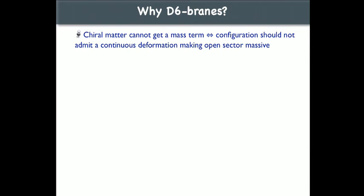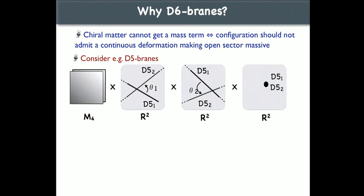Why are we using D6-branes and not something simpler? The key point is that chiral matter is topological in a sense — chiral fermions are a bunch of fermions for which you cannot write down a Dirac mass term, so there is no continuous parameter that gives them a mass. In this sense it is topological against smooth deformations. If you have a theory in which there is a continuous deformation that makes the interesting sector massive, then it means this sector is non-chiral.